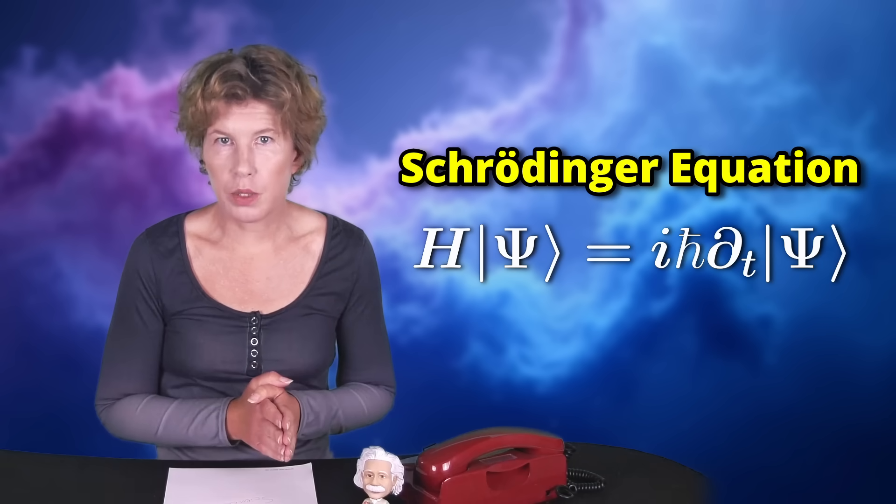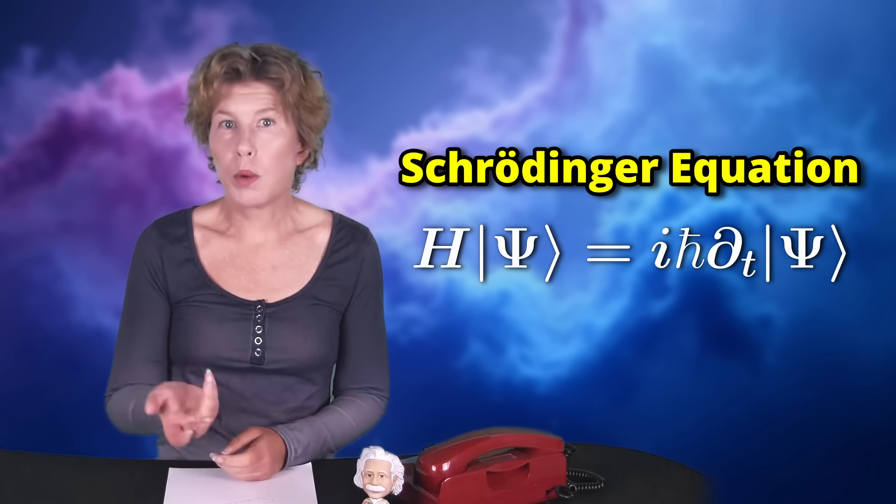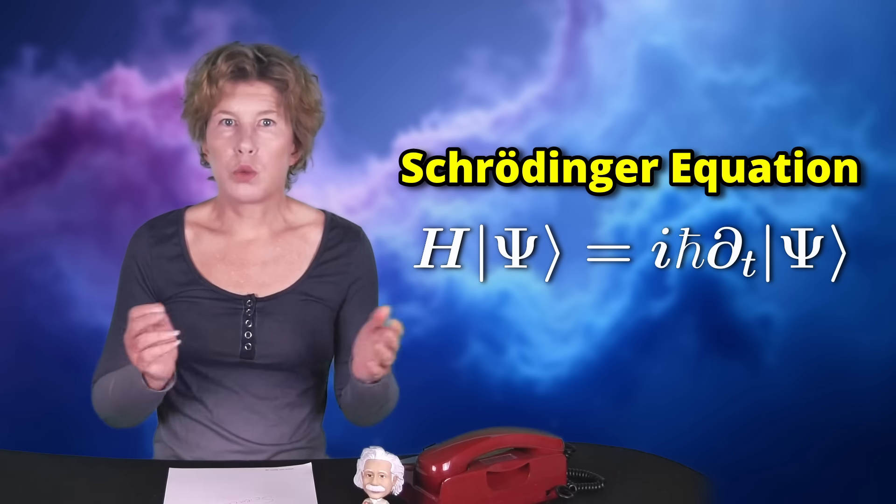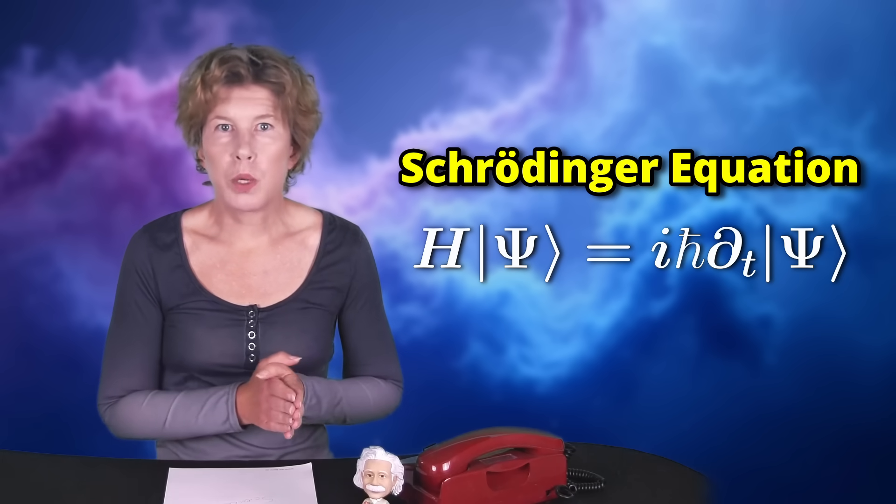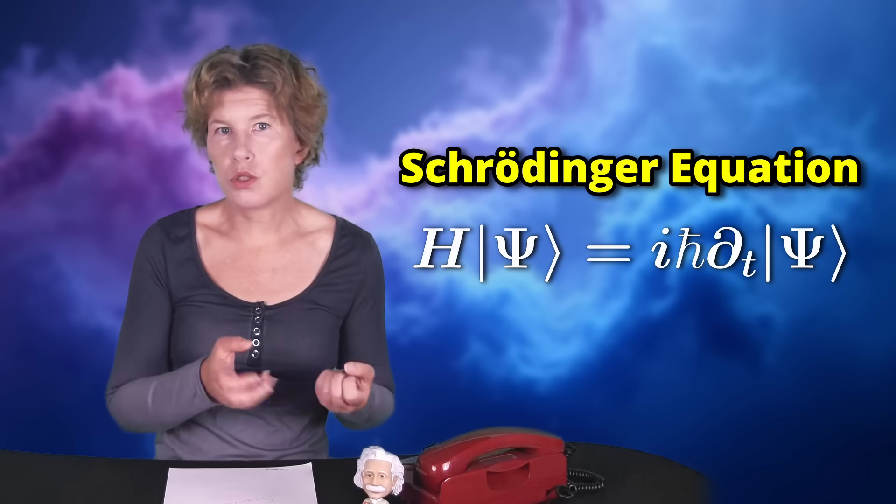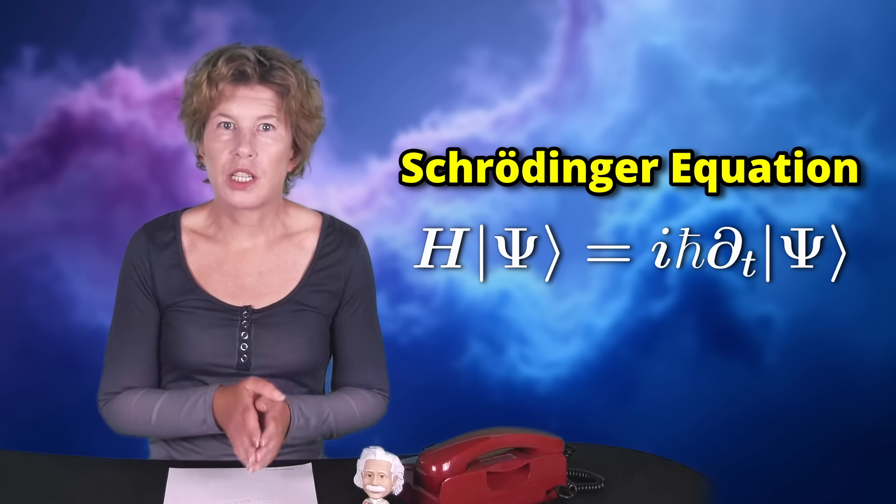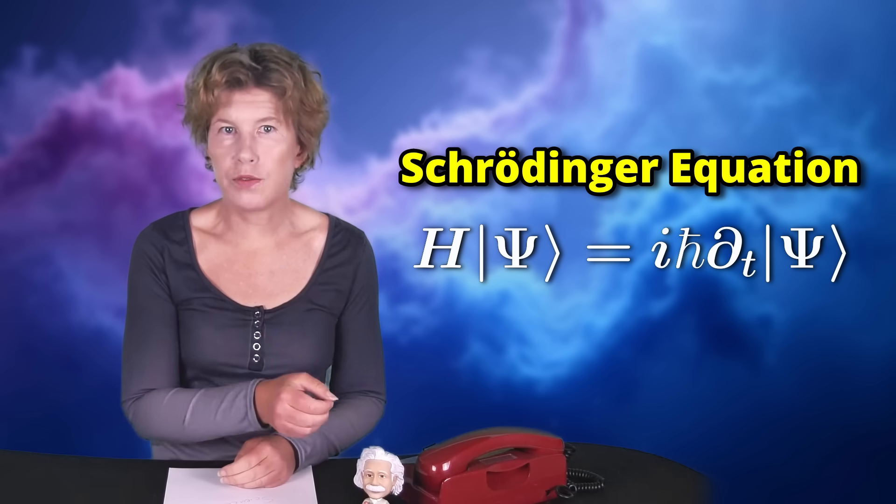To see why, remember that in quantum mechanics everything is described by a wave function, but only if the wave function solves an equation called the Schrödinger equation. This is how quantum physics works. If you want to, say, find out what a particle does, you need to solve the Schrödinger equation to calculate what the wave function does.